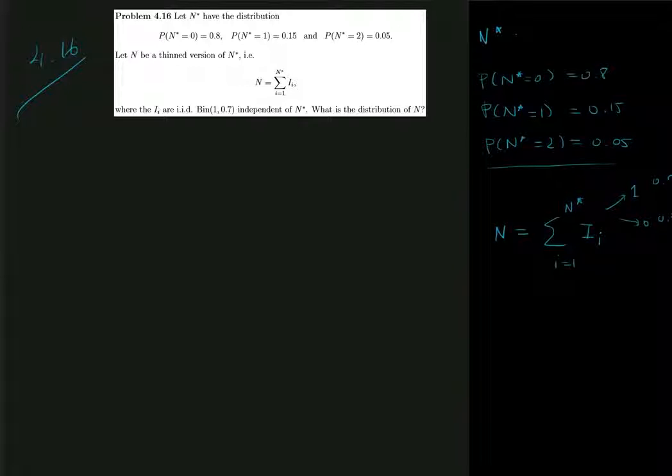This is where each of the coin tosses are binomially distributed, parameter 1 and probability parameter 0.7, and they are iid and independent of n.